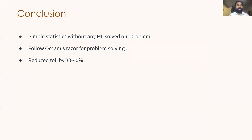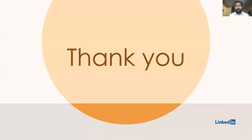In conclusion, we were able to use simple statistics to solve this problem without using any ML. We followed something called Occam's Razor for problem solving — always go for the simplest solution because the simplest solution is always the best. We were able to reduce toil by almost 30 to 40 percent. Currently, we have integrated this feature not only for us via Slack recommendations but also for our downstream clients via API endpoints, so all our teams can utilize the data. Thank you so much — I hope you learned a lot about alert correlation and the modified Z-score.